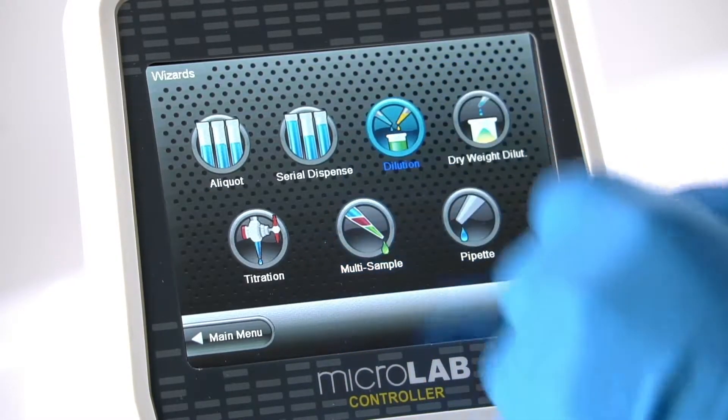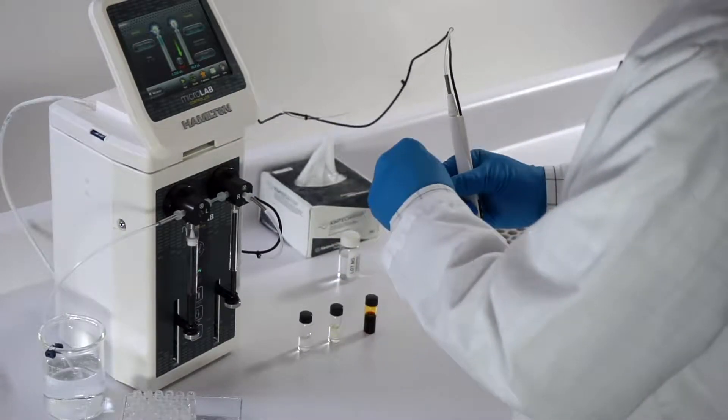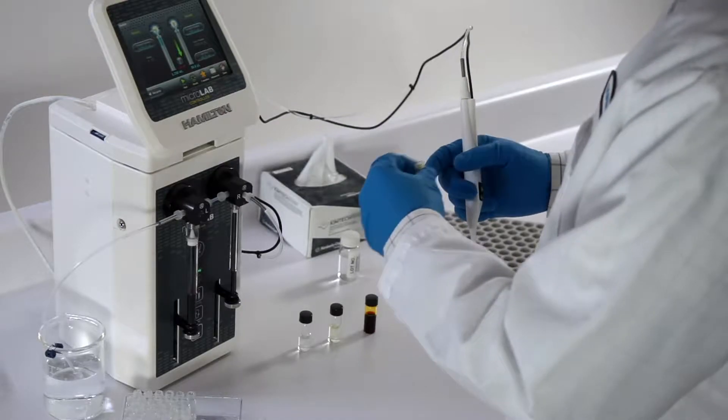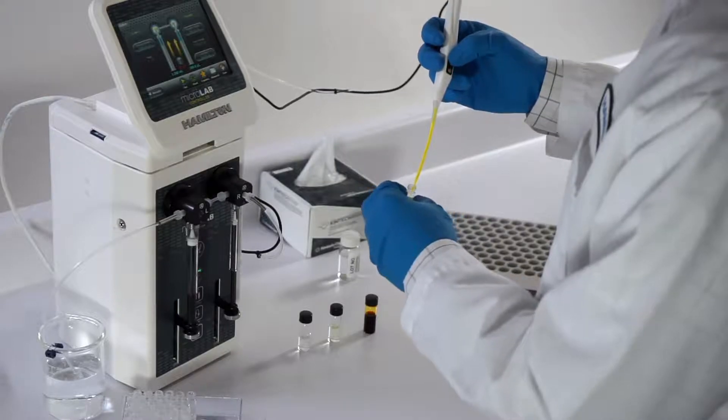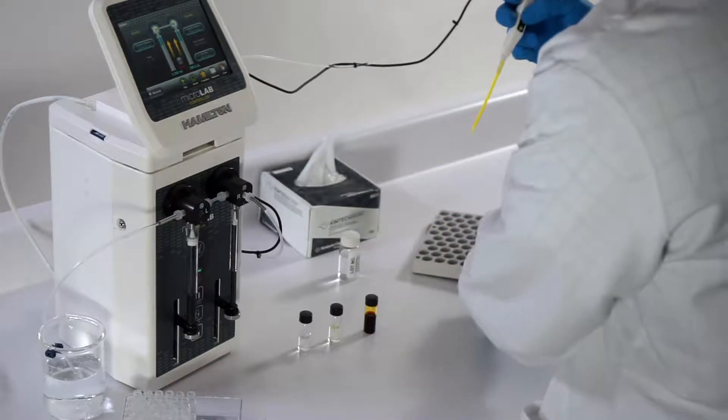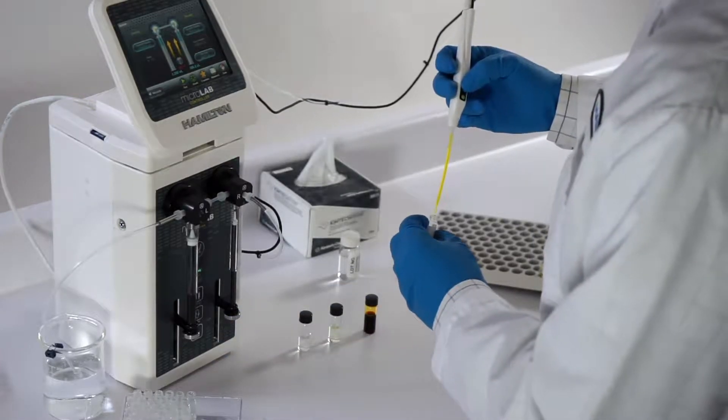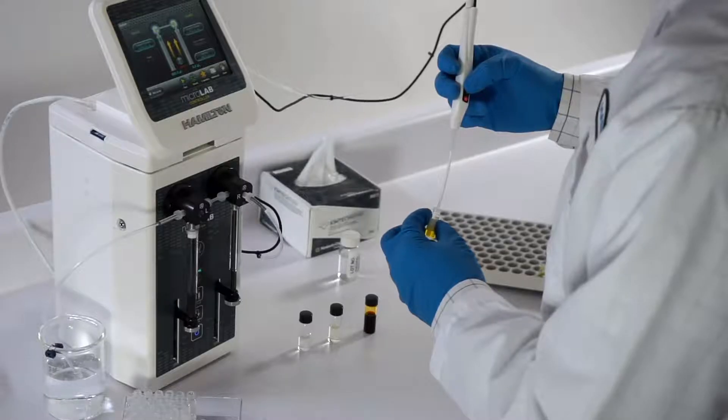Dilutions for a standard curve are made using the serial dilution wizard. A portion of the stock solution is aspirated into the hand probe and then dispensed into a clean vial. The diluent follows the stock solution to ensure a complete dilution and prepares the probe for the next dilution step.